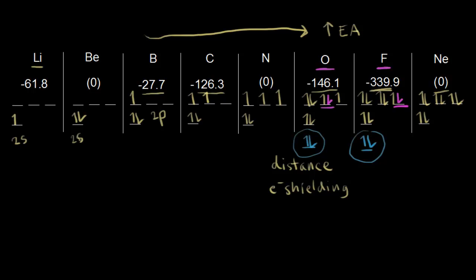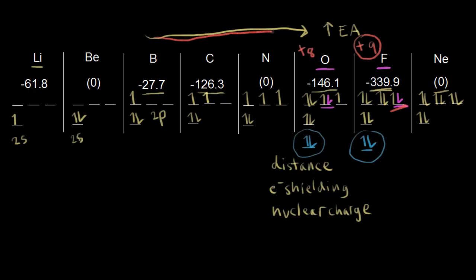So we move on to the third factor: nuclear charge. We need to look at the atomic numbers. Oxygen has an atomic number of eight — eight protons in the nucleus, giving a nuclear charge of +8. Fluorine has an atomic number of nine — nine protons, giving a nuclear charge of +9. Here we see a difference. Fluorine has a higher positive nuclear charge, and the higher the magnitude of that positive charge, the more it can attract the added electron. Therefore, the fluorine atom has a higher affinity for that electron and releases more energy. As you go across a period, you're always adding protons, which creates increased attraction for the added electron and therefore increased electron affinity.